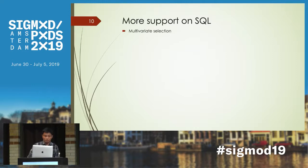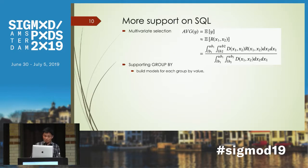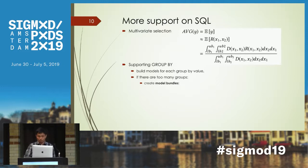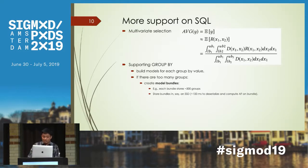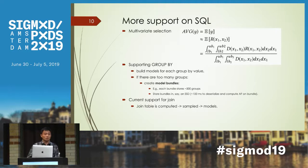For SQL support: to support multivariate selection, we just need to do multivariate integration. To support group by, we build models for each group by value. If there are too many groups, we create model bundles to organize the models — each model bundle stores maybe 500 groups, stored in SSD. To deserialize and compute the aggregate from the models takes only around 100 milliseconds. To support joins, we calculate the joined table and make samples of that, so we can build models for it.